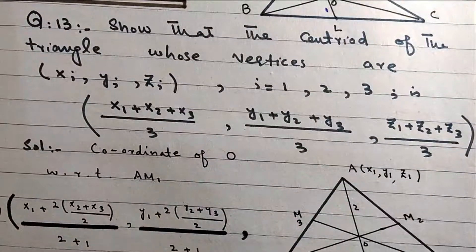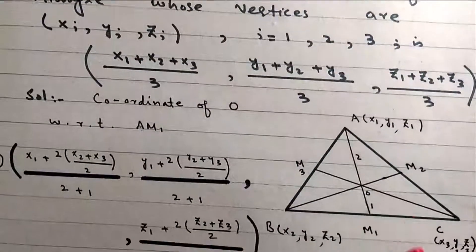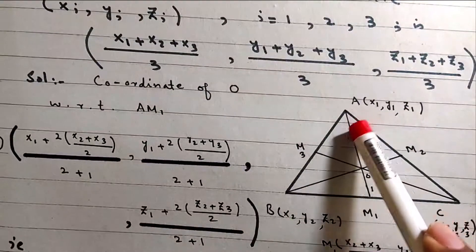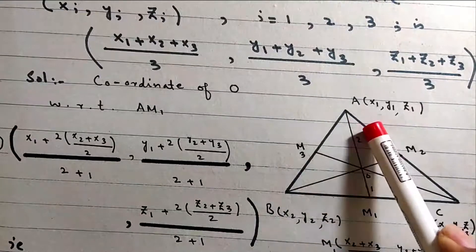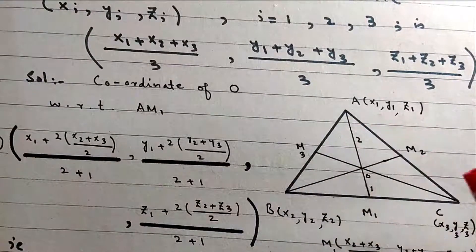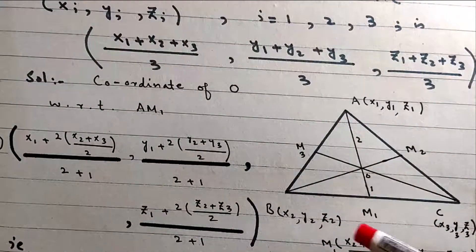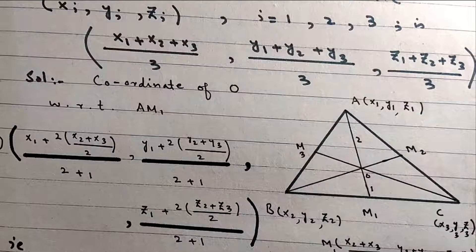Coordinate of O with respect to the median. We have vertices A (x1, y1, z1), B (x2, y2, z2), and C (x3, y3, z3).